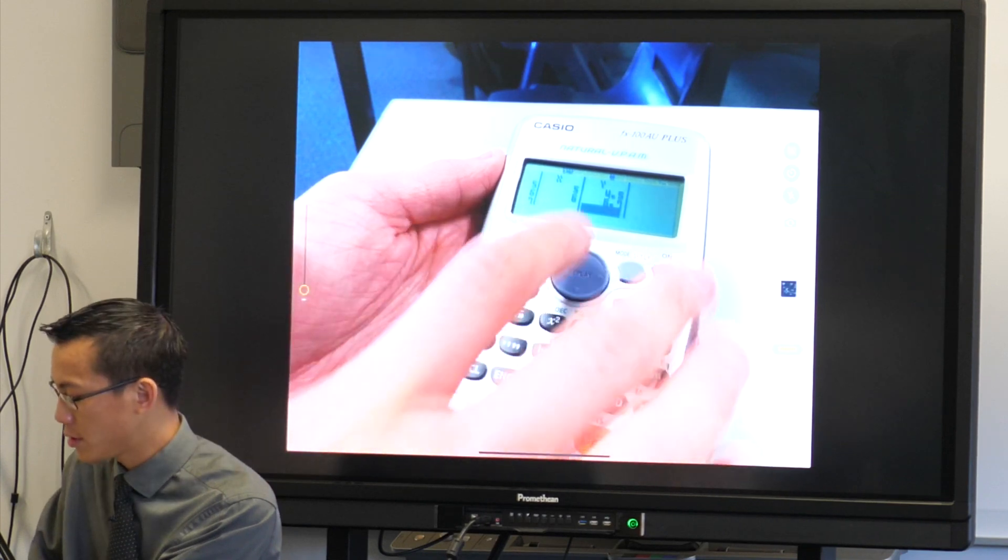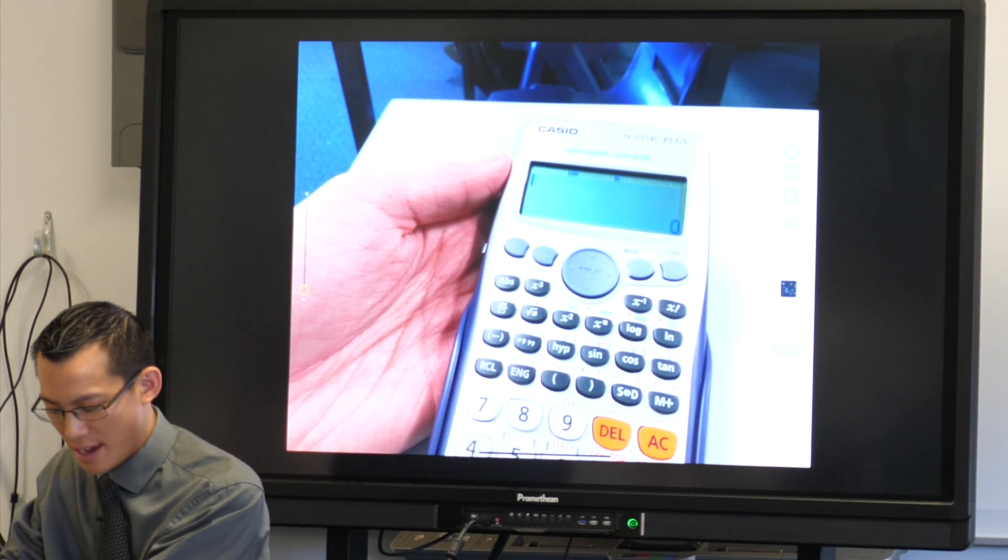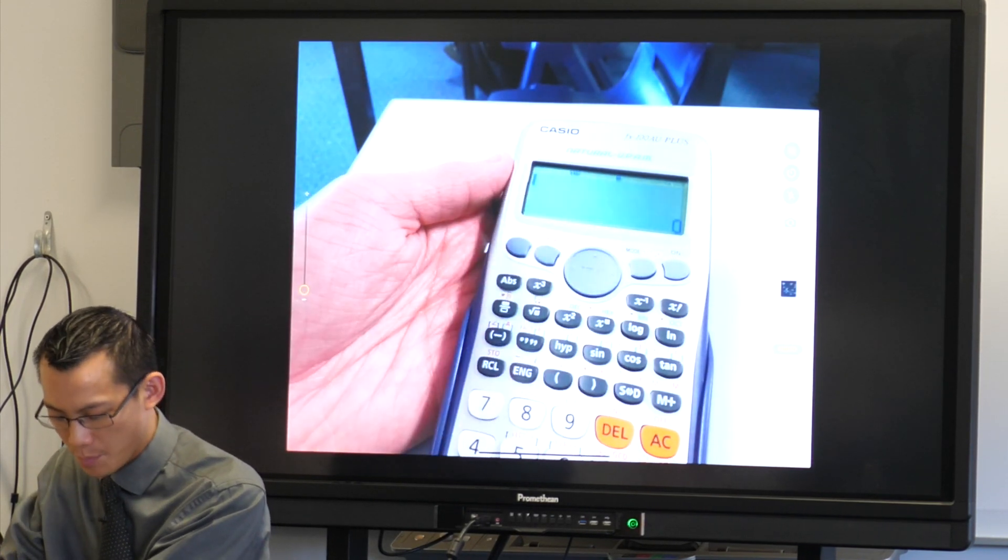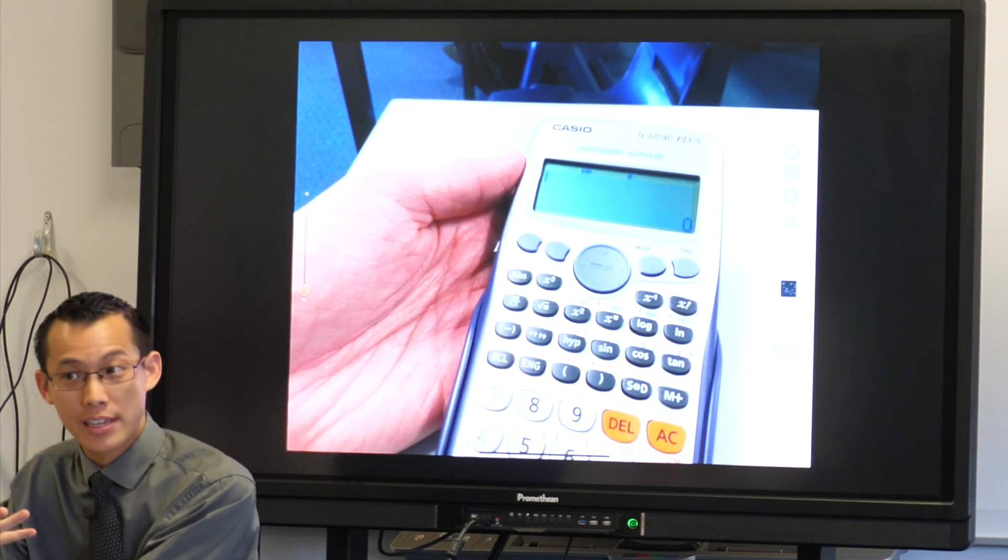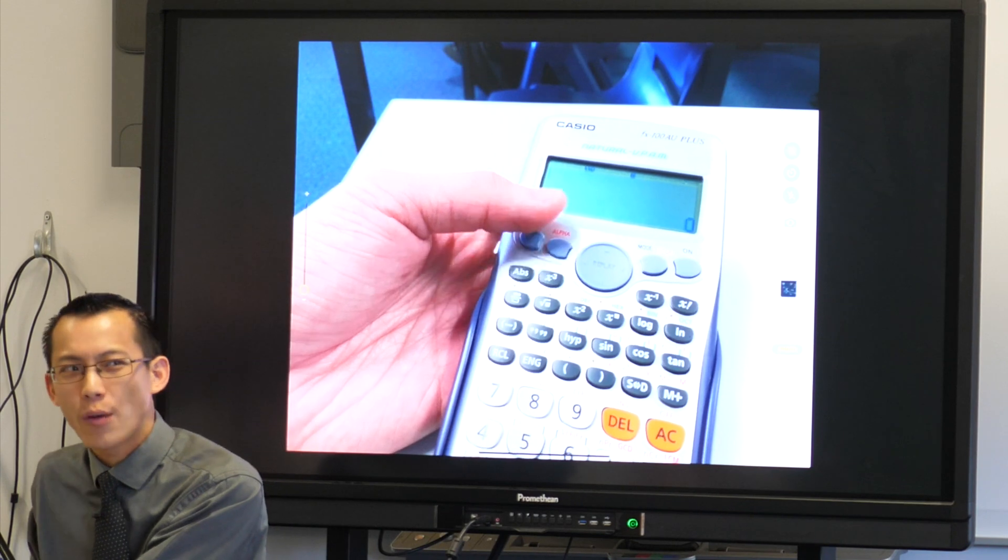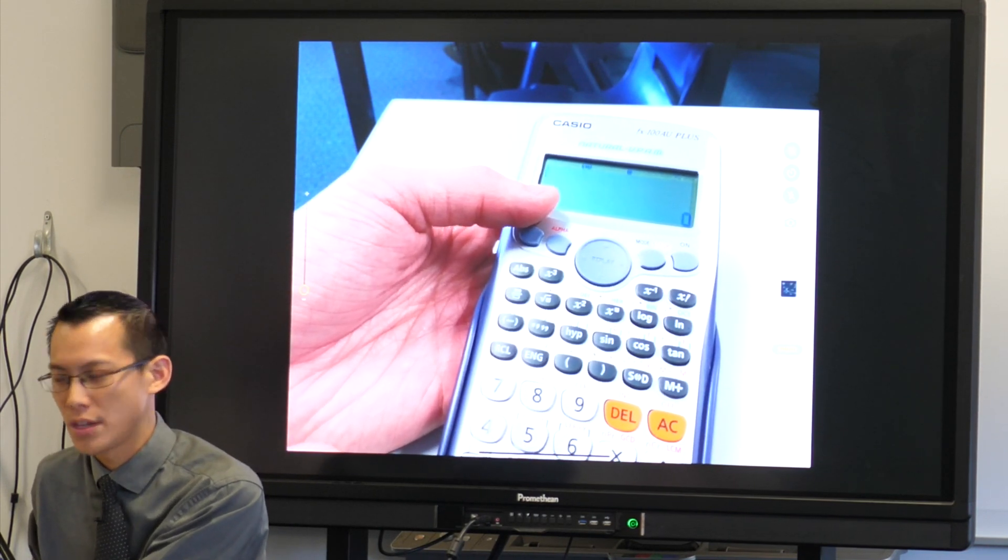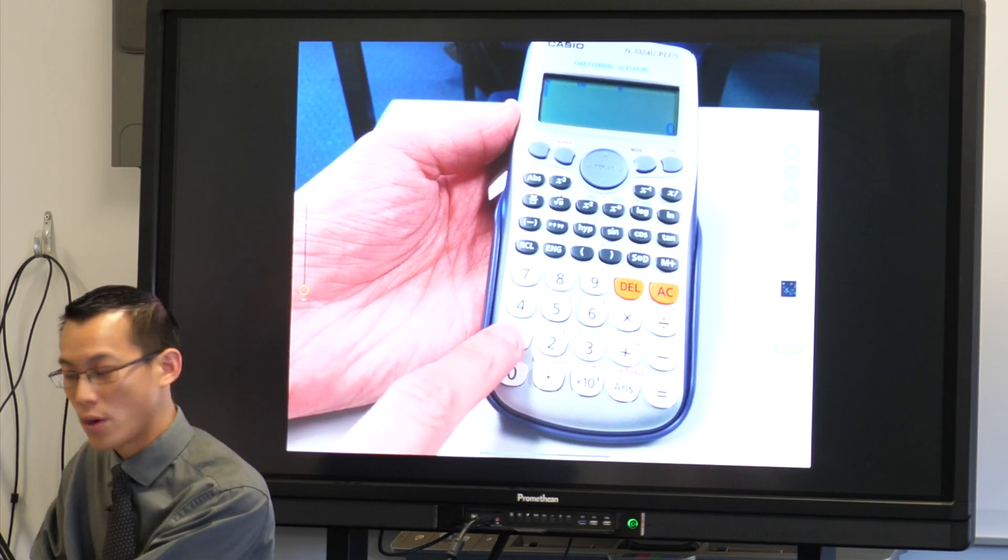Now in this exercise you want Pearson's correlation coefficient. We know how to get to that. In fact, that's going to be the same place where we get this other information that the question is asking for. So have a look: how do I get to Pearson's coefficient again? Shift 1, because you can see there's 'stat' right there above the 1 button.